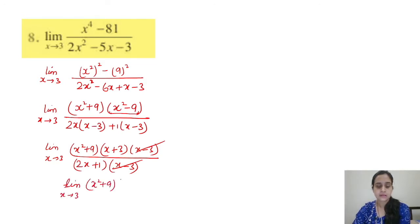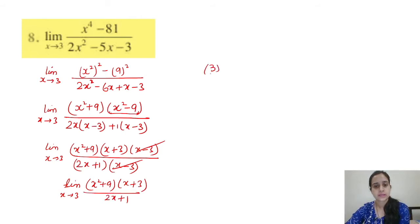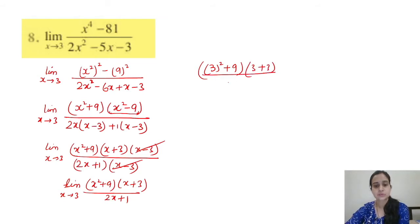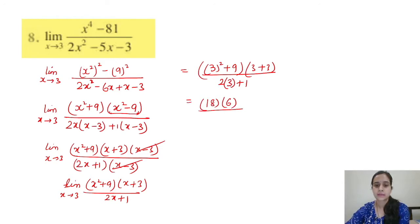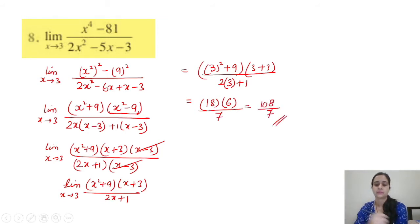After cancellation we have limit x→3 of (x² + 9)(x + 3)/(2x + 1). Substituting x = 3: numerator = (9 + 9)(3 + 3) = 18 × 6 = 108; denominator = 2×3 + 1 = 7. The answer is 108/7.